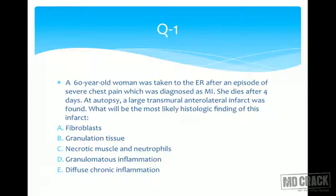The clues are very clear. The patient died — that's why the word autopsy is used — and it is four days after the MI. There are five options: fibroblast, granulation tissue, necrotic muscle and neutrophils, granulomatous inflammation, and diffuse chronic inflammation. Don't read the options first. You already know this is MI after four days — think what histologic cells you'd expect, then look for that option.